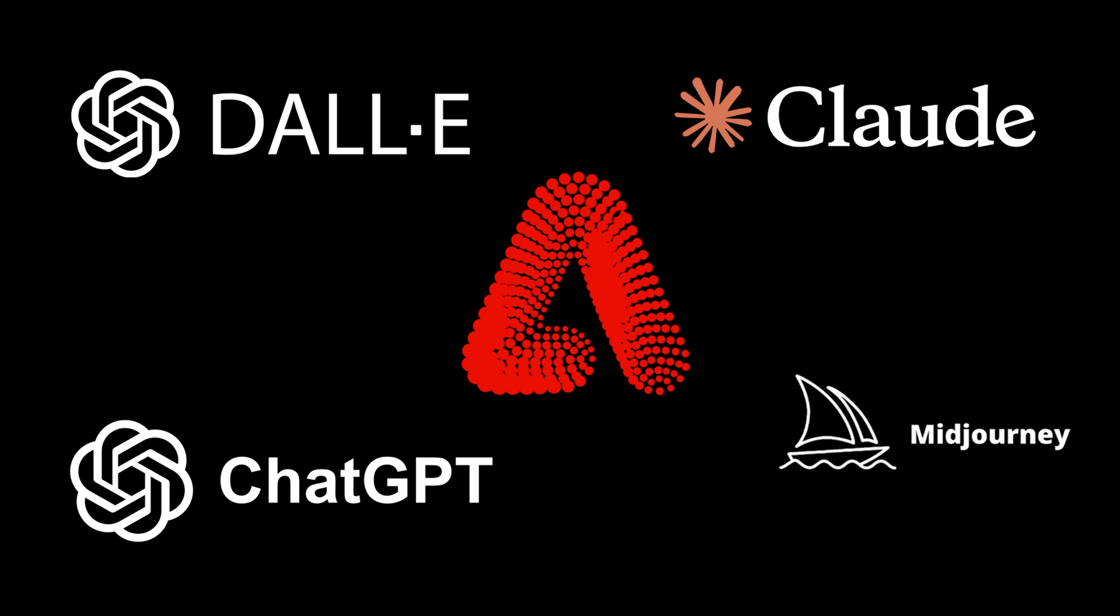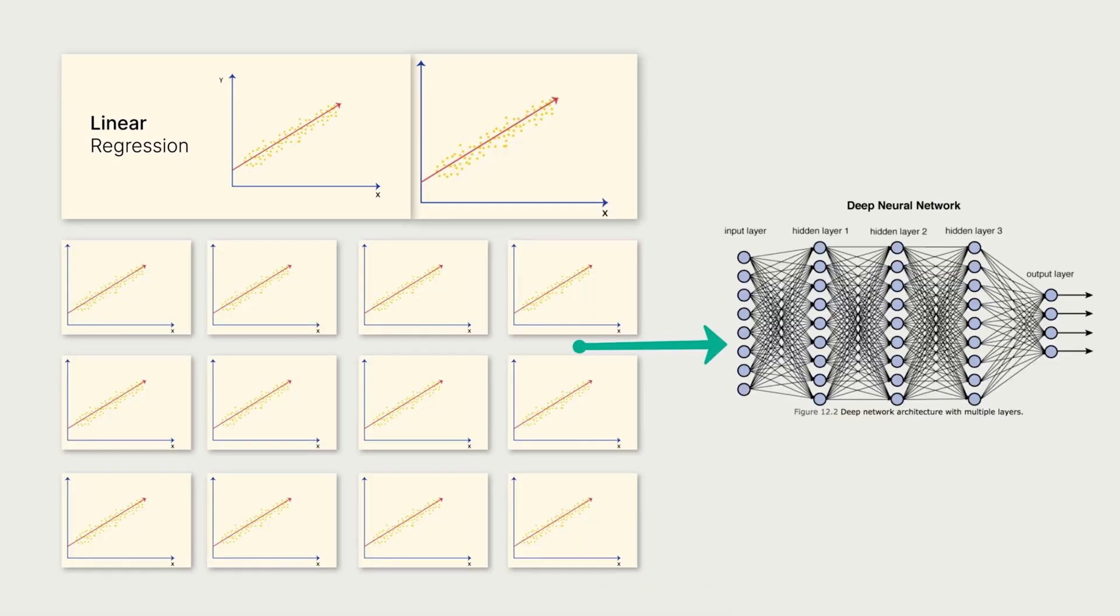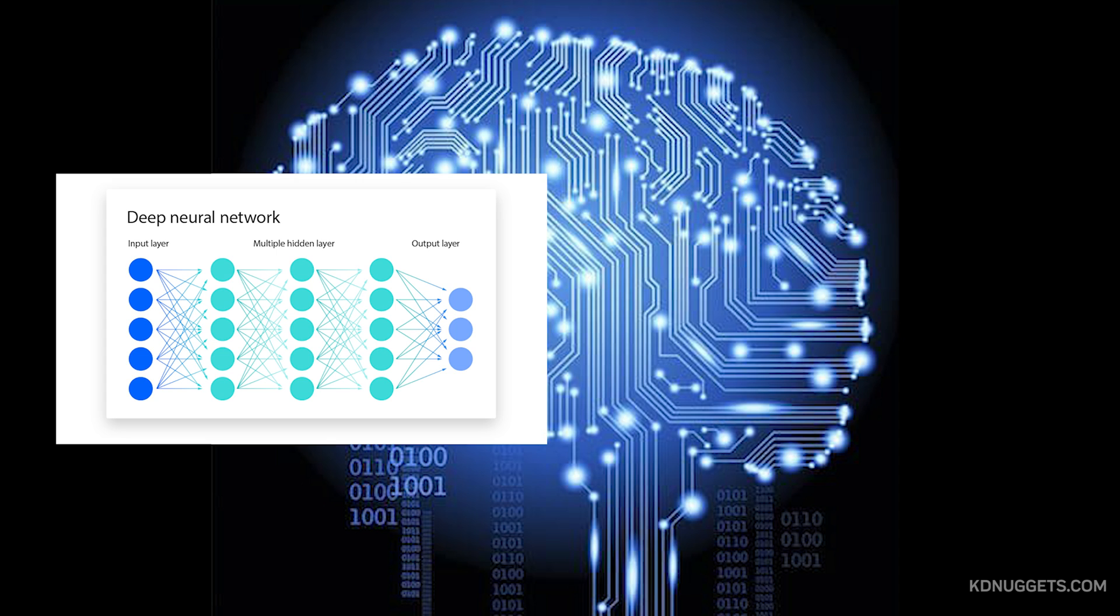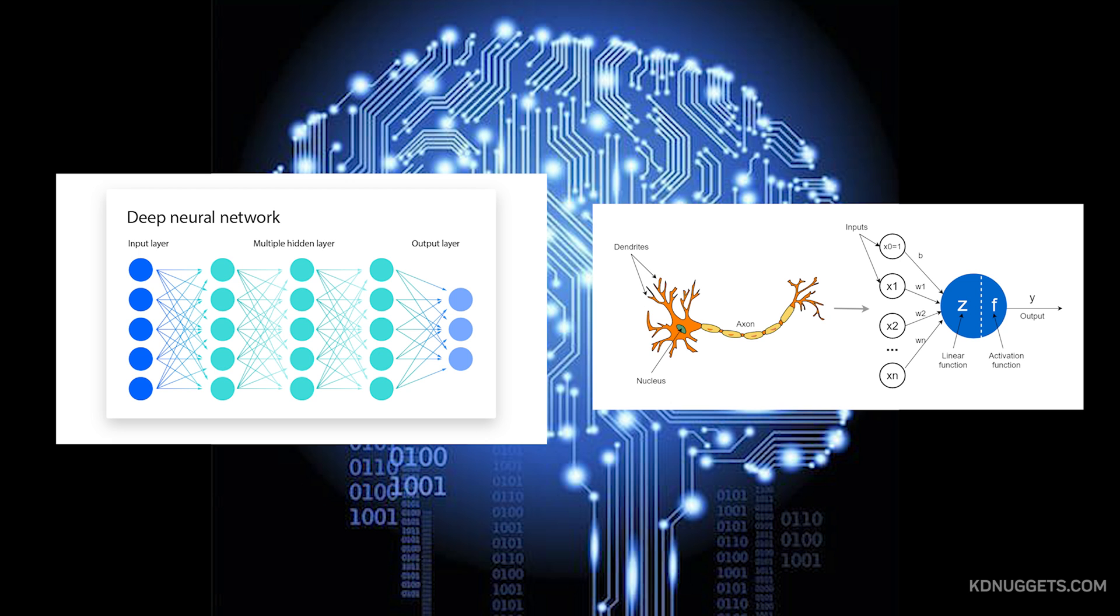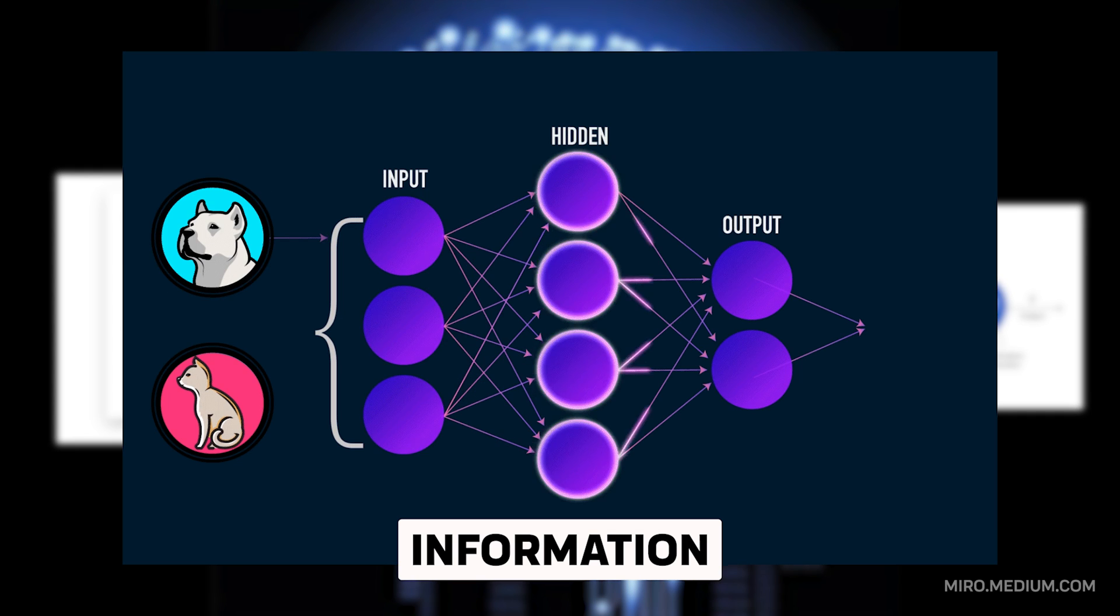A neural network can be thought of as a generalized, layered extension of linear regression that incorporates nonlinear transformations to capture complex relationships. At their core, neural networks are like a digital brain built from layers of interconnected nodes called neurons. Each neuron processes information and passes it forward, just like biological neurons firing in your brain.